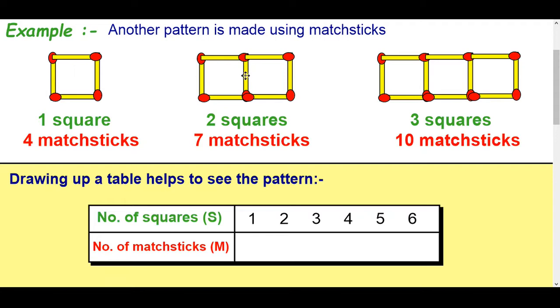In which case you'll need seven—one, two, three, four, five, six, seven matchsticks. And again you join another one on for three squares and it's ten matchsticks. So each time you kind of need three more matchsticks, you can see here, to make the next square instead of four.